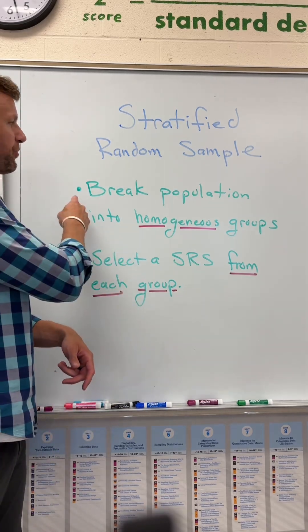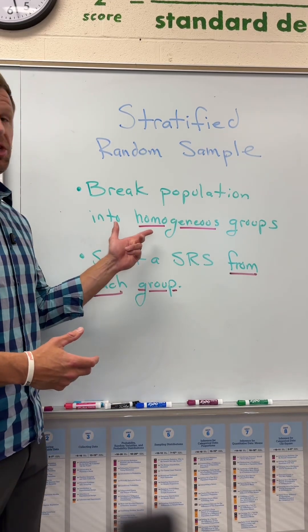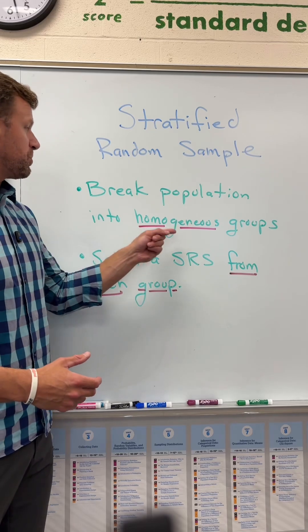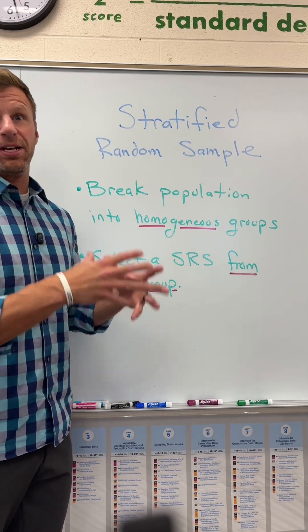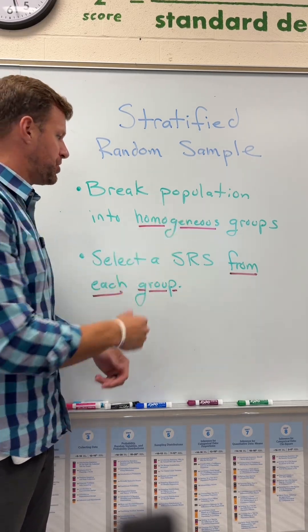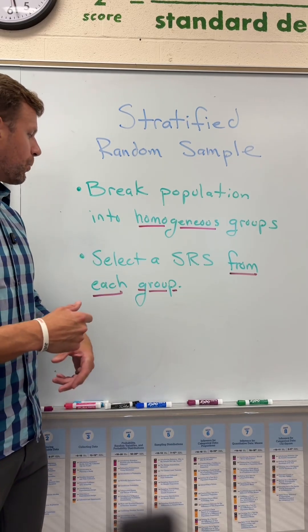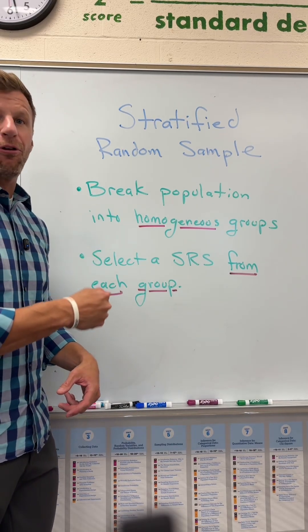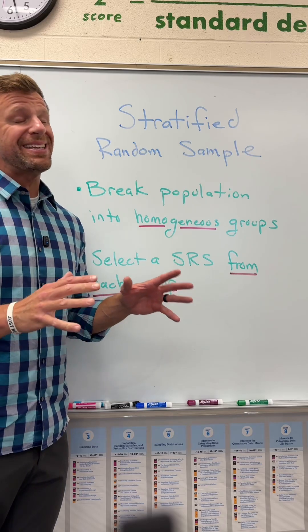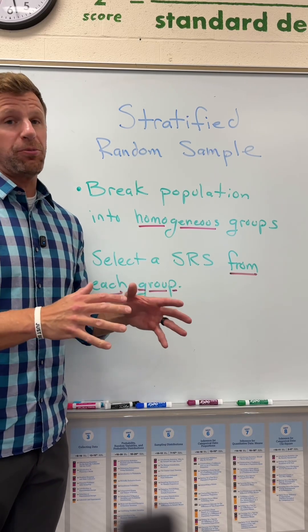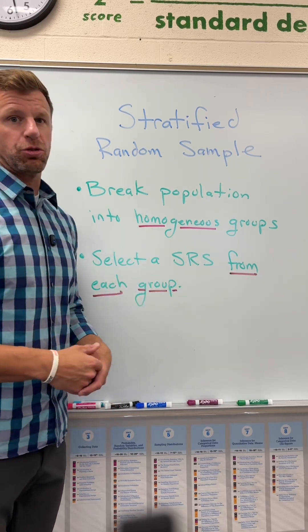First, what is it? Basically, the first thing you do is you break your population into homogeneous groups, which means in each group they all have something in common, hence homogeneous. Then you select a simple random sample from each group. You don't even have to take the same amount from each group — you just have to take some from each group.